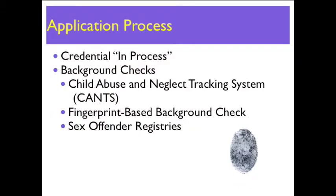If you meet all the qualifications, your application will be considered in process. The Child Abuse and Neglect Tracking System Authorization form will be sent to the Department of Children and Family Services for processing only after all qualifications are met, including a complete Central Billing Office CBO enrollment application. The DCFS process takes 8 to 12 weeks. A fingerprint-based background check authorization form will be sent to you so you may complete this portion of the background check by having your fingerprints taken at an authorized live scan vendor. Provider Connections staff check state and national sex offender registries. Once the background checks are complete and we have received your receipt, you will be issued your credential.